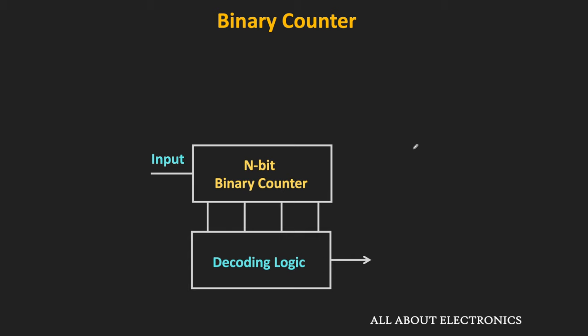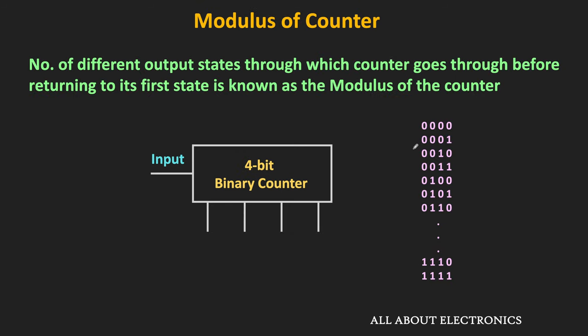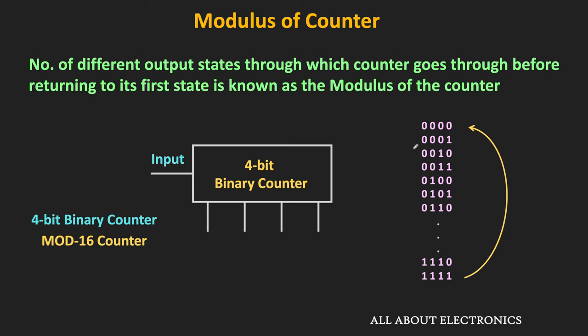When talking about counters, we should also know what is called the modulus of the counter. The modulus of the counter is the number of different output states through which the counter goes before returning to its first state. For a 4-bit binary counter, it goes from 0 to 15, or in binary from 0000 to 1111, and once it registers 1111 it goes back to 0000. So the total number of different output states is 16, meaning the modulus of the 4-bit binary counter is 16 — it is a mod-16 counter.